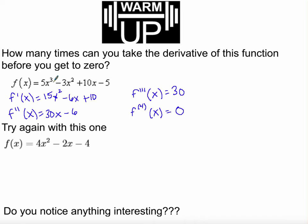Notice that the degree of this polynomial is three, and it would take us four turns before we would get down to zero from taking the derivative. So what do you think that means? Is there a pattern here? Make a guess. How many times do you think it's going to take us to take the derivative of this quadratic function? Because the highest degree is two. How many times do you think? Let's try it.